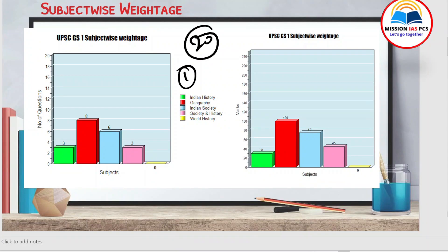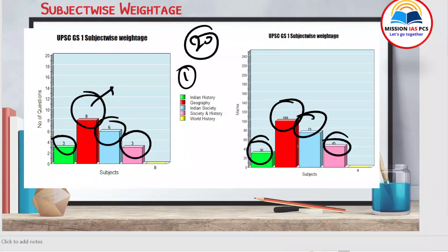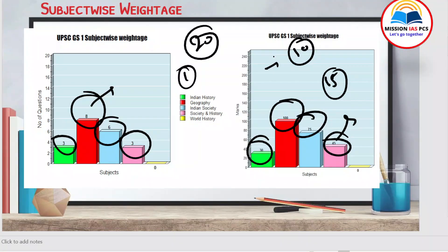I have made a bar graph showing the distribution. Geography had 8 questions totaling 100 marks. Indian history had 3 questions totaling 30 marks. Indian society had 6 questions totaling 75 marks. History linked with society had 3 questions totaling 45 marks — 15 marks each. UPSC generally asks 10-marker or 15-marker questions, and you should be aware of this pattern.